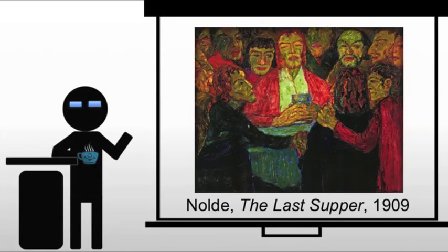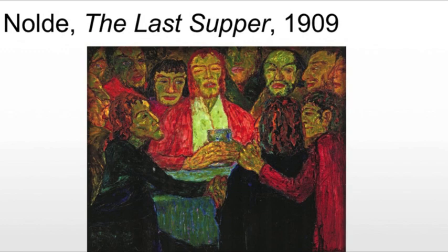He also creates the Last Supper, and here we see figures crammed into a non-existent space with color adding to the fervor. If you think back to Leonardo's Last Supper, we see a space that is intentionally small to play up the emotion. Nold is taking that one step further, creating a space where it's impossible for these figures to do anything but exist as a tiny group around this one central figure.